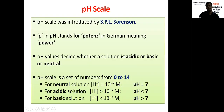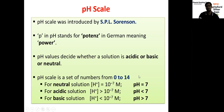pH scale: the pH scale was introduced by S.P.L. Sorensen. The 'p' stands for 'potenz,' a German word meaning power or potence. pH values range from 0 to 14 and are used to decide whether a solution is acidic, basic, or neutral. For a neutral solution, pH equals 7. For an acidic solution, pH is less than 7. For a basic solution, pH is greater than 7.